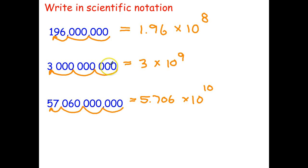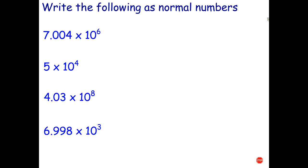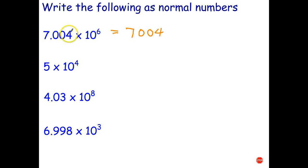Let's go back the other way to finish this video off — a quick way of writing a number already in scientific notation as an ordinary number, without writing out the power of 10 in full. You can just move the decimal point. First, write the number: 7.004. Now move your decimal point 6 places to the right: one, two, three, four, five, six. Putting in commas to make the number easier to read, 7.004 times 10 to the power of 6 is 7,004,000.